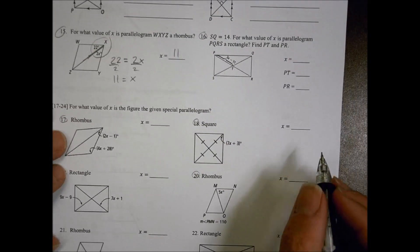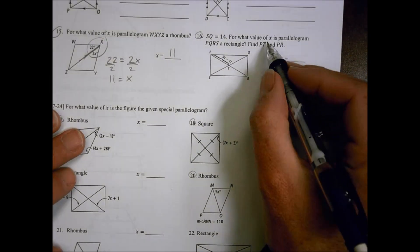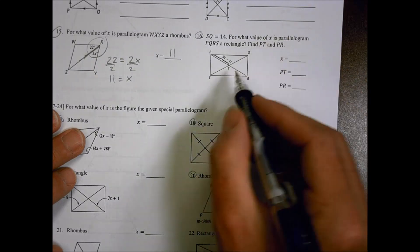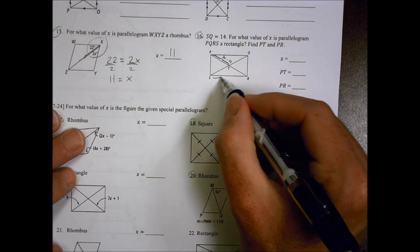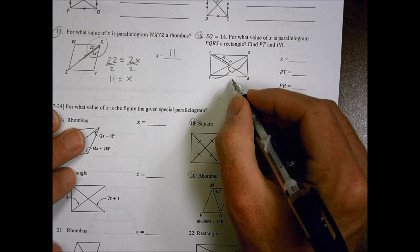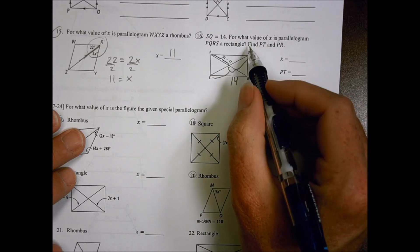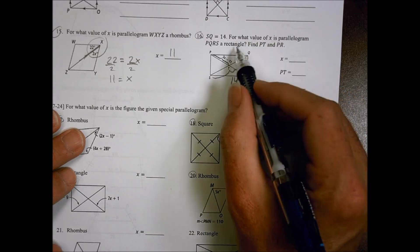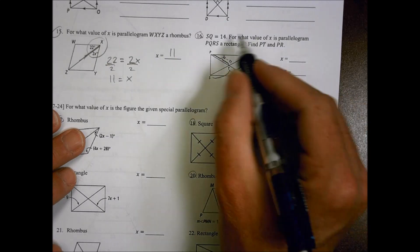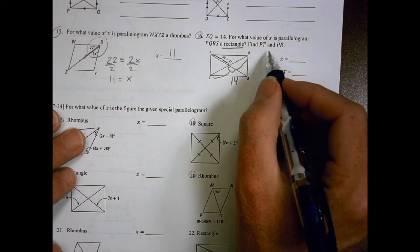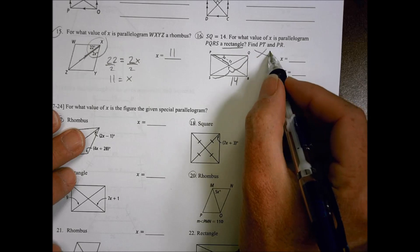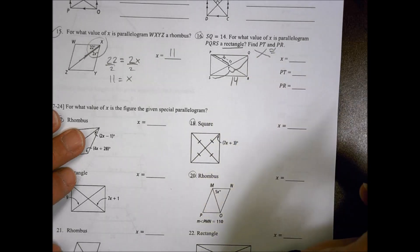For number 16. For what value of X, SQ, so SQ, this whole length right there is equal to 14. So for what value of X is parallelogram PQRS a rectangle? So a rectangle, remember with a rectangle, our diagonals are going to be congruent on a rectangle.